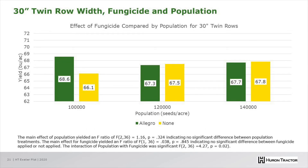Looking at the 30-inch twin row treatment, a similar story: there was no statistically significant yield benefit to the Allegro application regardless of population planted.